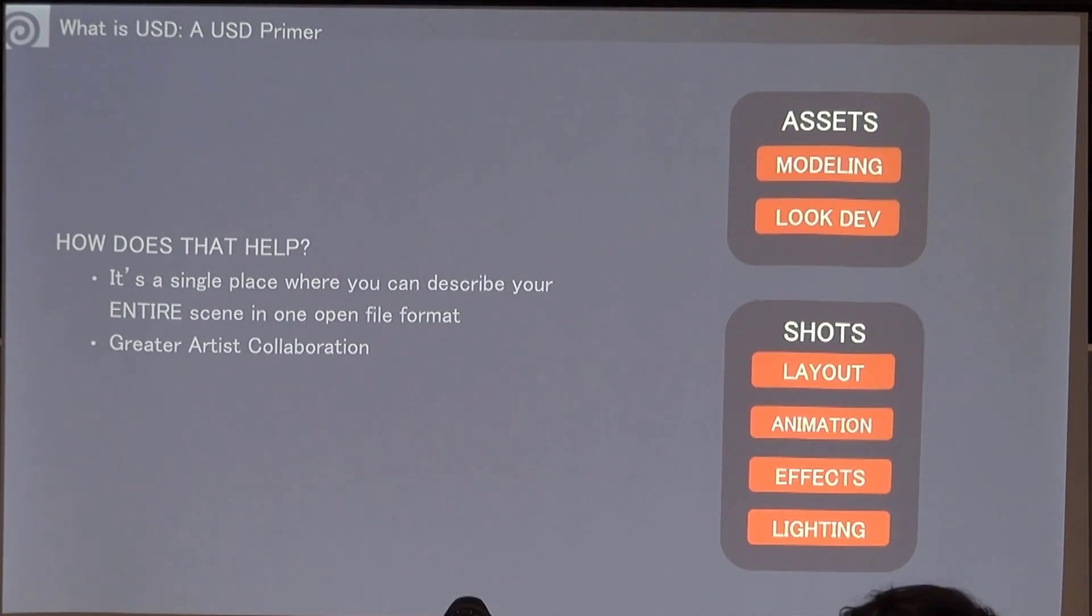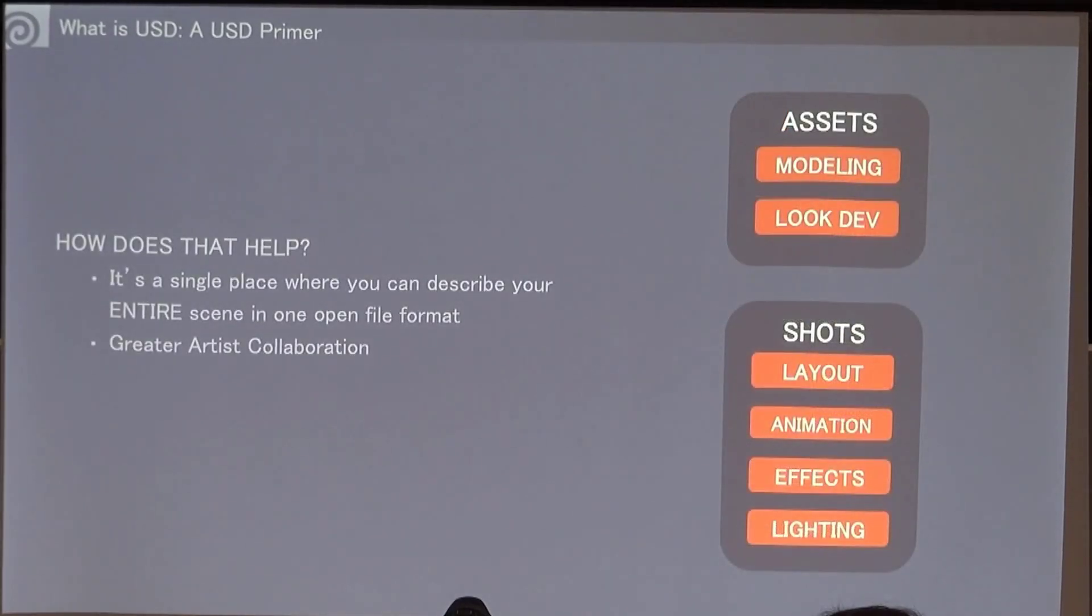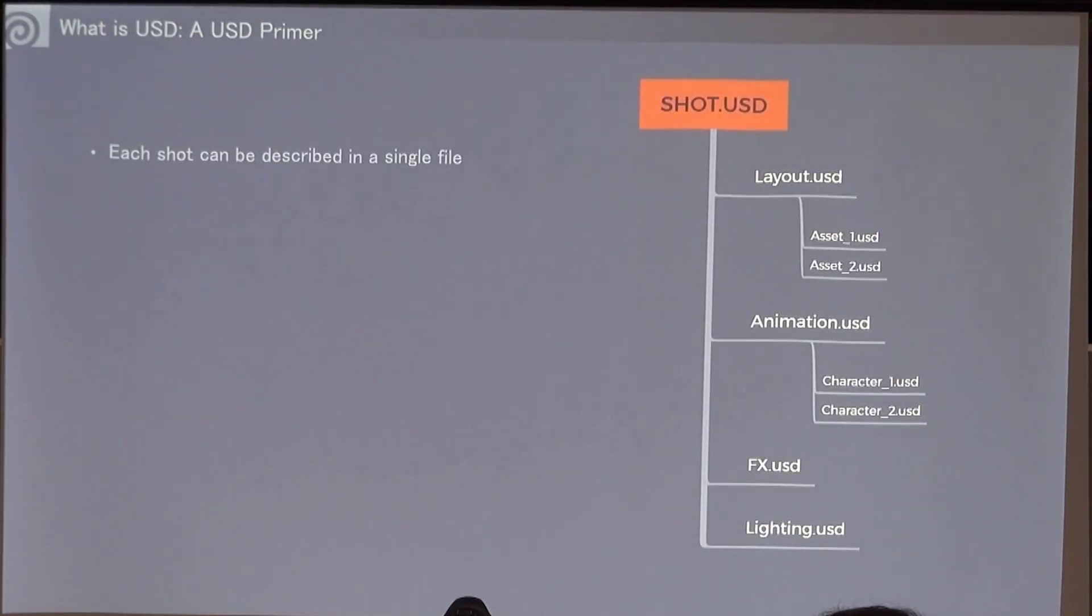If you look at this image on the right here, the idea is that all of these different departments or different phases of the pipeline can have their own USD layer associated with them. Each shot can be described in a single file, but then that file can be referencing a particular department. As you see in the graph here, we have different layers for each department.